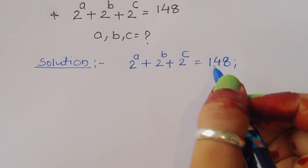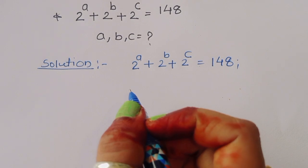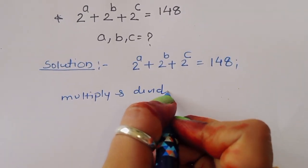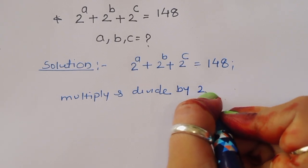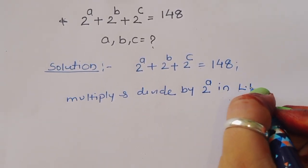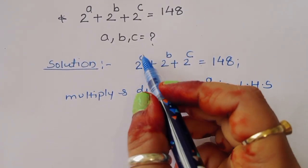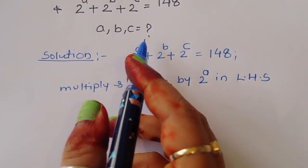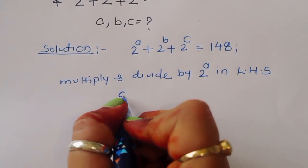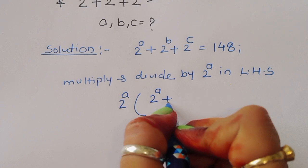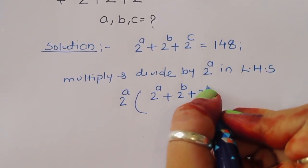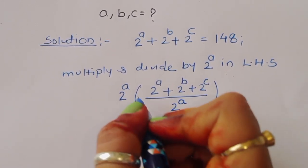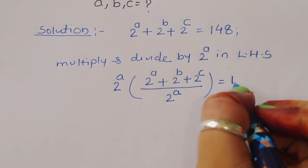We can do one thing here — multiply and divide by 2 power a in the LHS. If we are multiplying and dividing by the same number 2 power a, the value remains the same. So 2 power a plus 2 power b plus 2 power c, divided by 2 power a — the 2 power a terms cancel — is equal to 148.